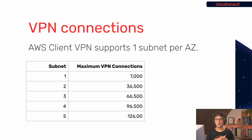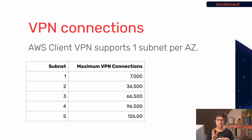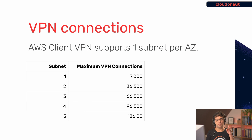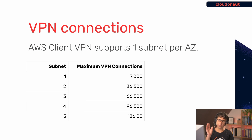Another important thing if you plan to use AWS Client VPN with many clients: Client VPN supports one subnet per availability zone, so depending on the region that's between two and five subnets maximum. The number of attached subnets defines the maximum VPN connections — with one subnet it's 7,000 connections; with two subnets it's 36,500; and so on. For large installations, check your region's AZ count and plan accordingly.